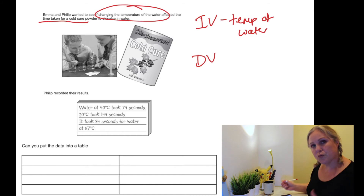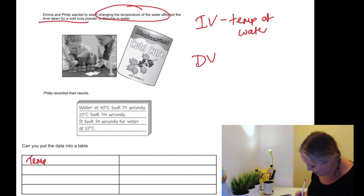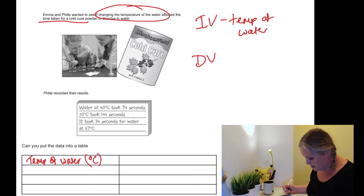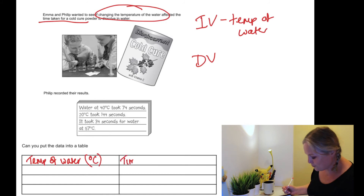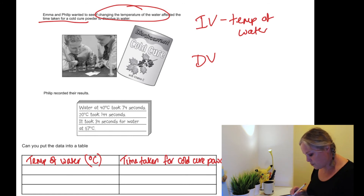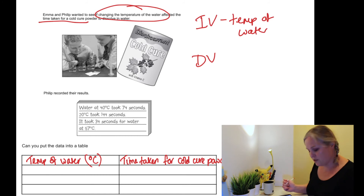So which way goes which? On the left is our independent variable, so we're going to have the temperature of water in degrees Celsius. On the right we need to put the time taken for the cold cure powder to dissolve, and that's in seconds. Reading the data: water at 40 degrees took 74 seconds, 20 degrees took 144 seconds, and 57 degrees Celsius took 34 seconds.